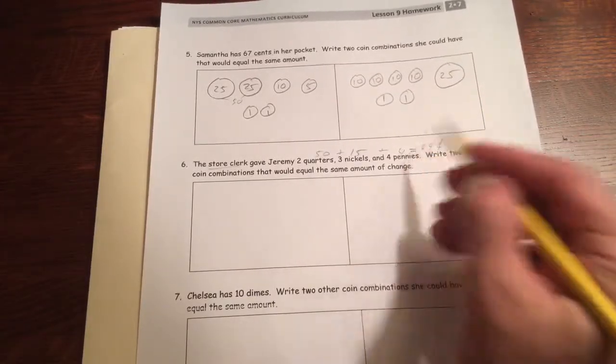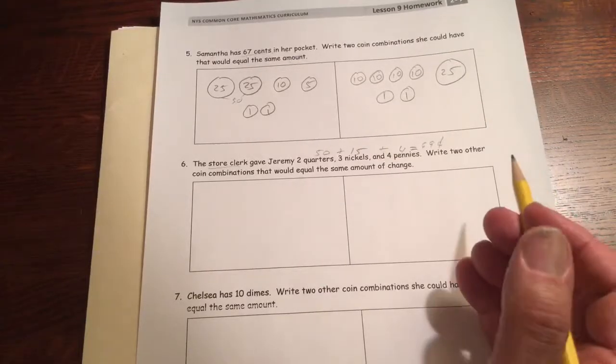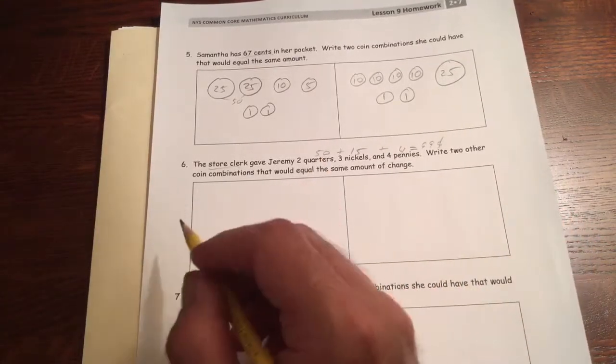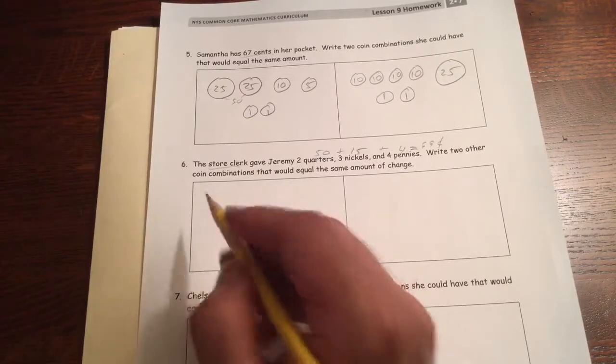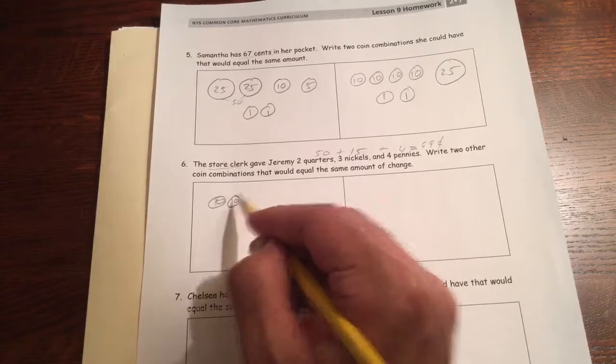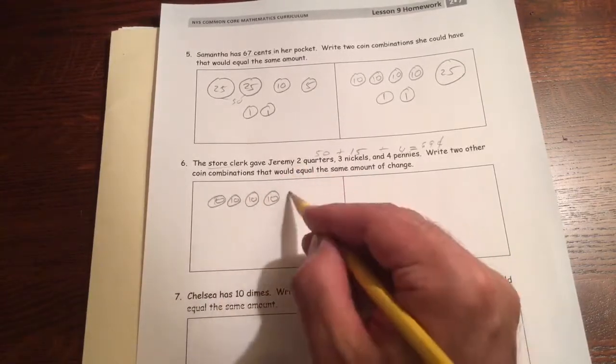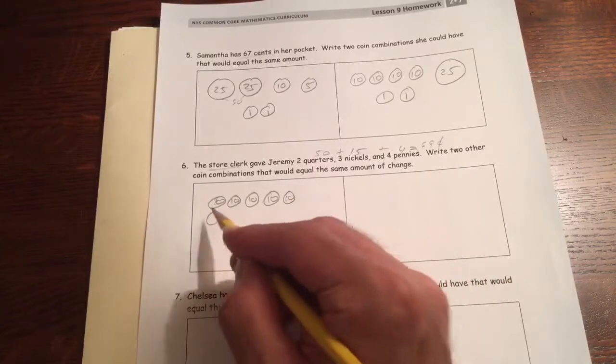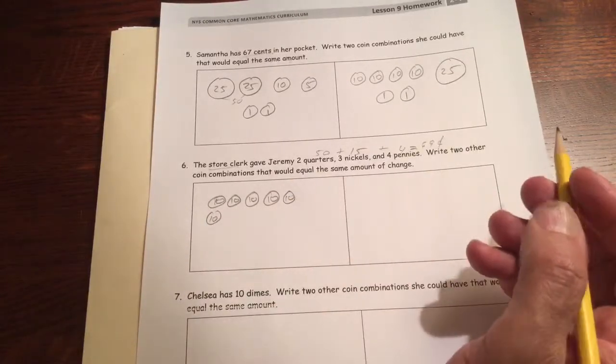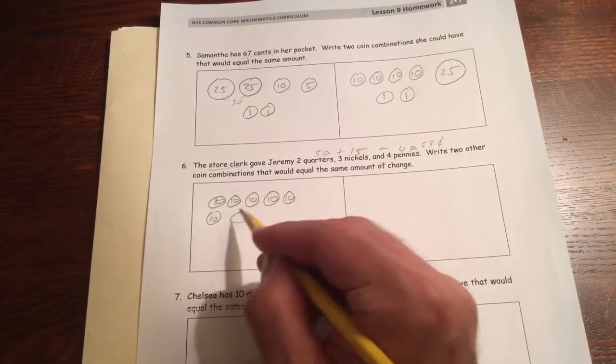So we have to find two different ways to make 69 cents. The two quarters, let's see, 69 cents. We could do four, five, 60 cents in dimes. And then 65. We can even nickel.